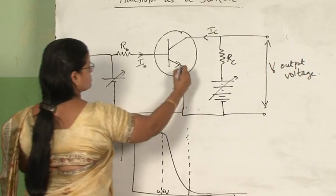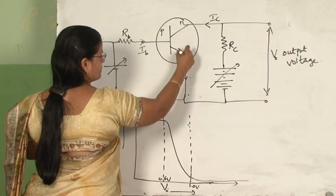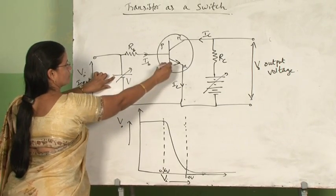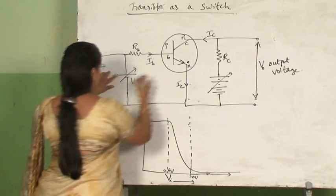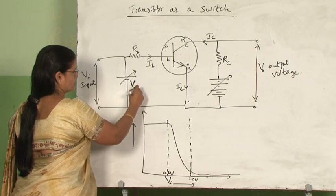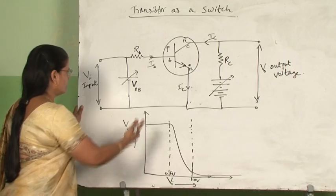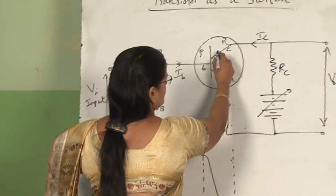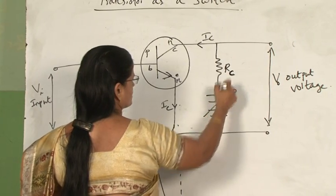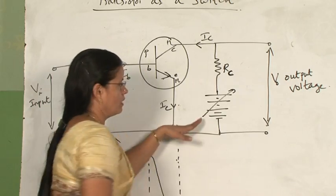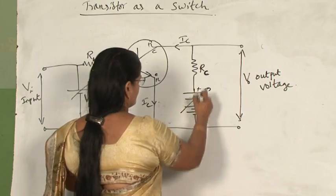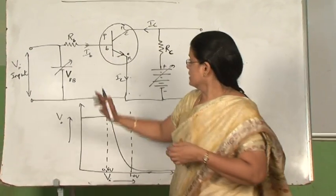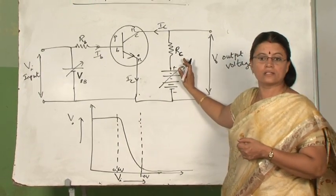Looking at the circuit diagram, we are using an NPN transistor. The voltage VBB applied gives forward biasing to the base-emitter section. The input voltage is given as VI. In the collector section, a resistance RC is connected along with a variable voltage battery. This battery connection gives reverse bias to the collector section — always the emitter section should be given forward bias and the collector section reverse bias.